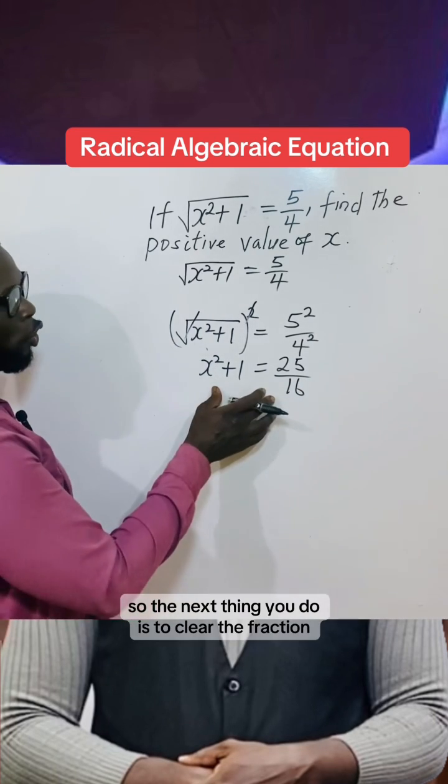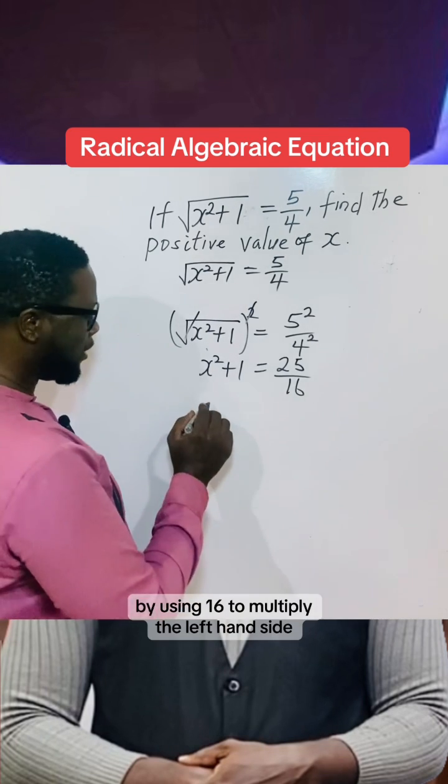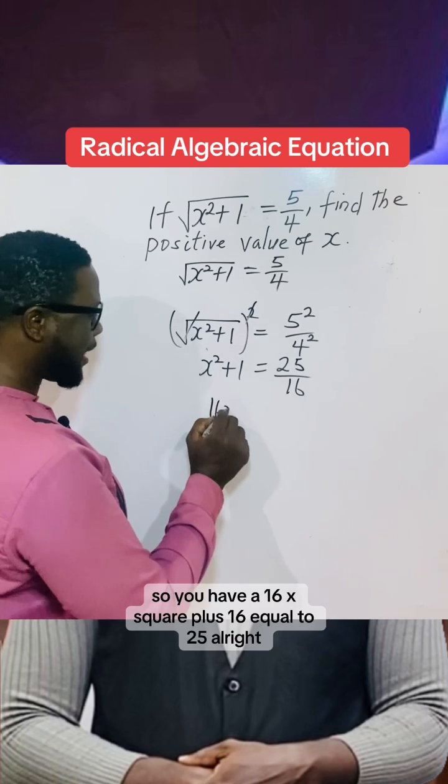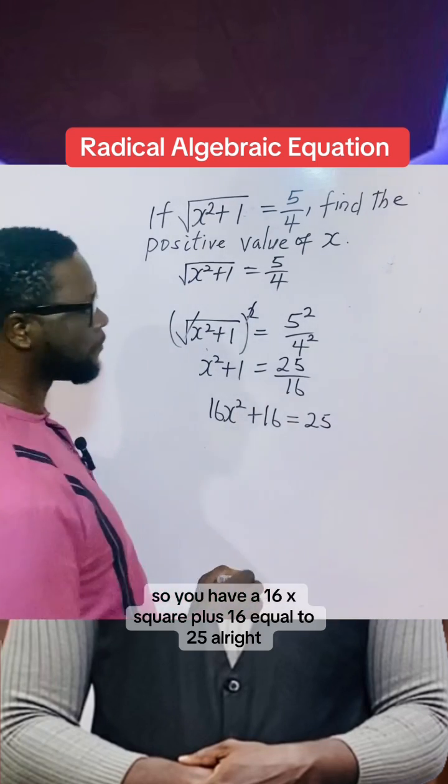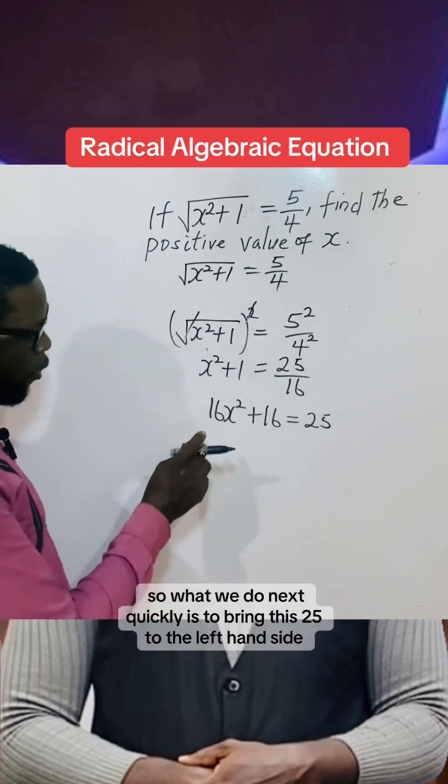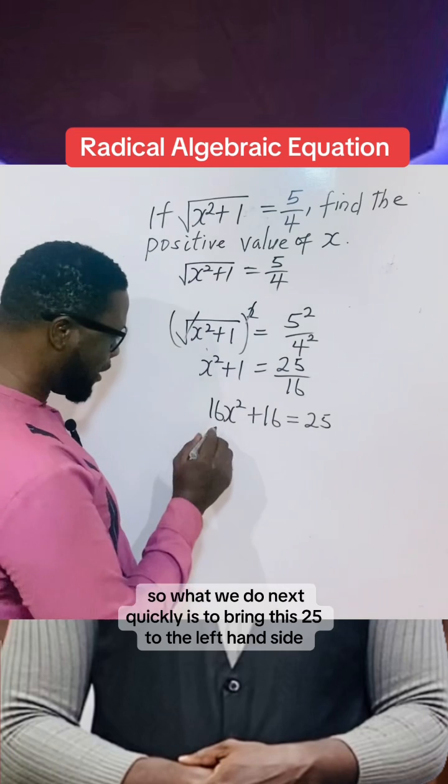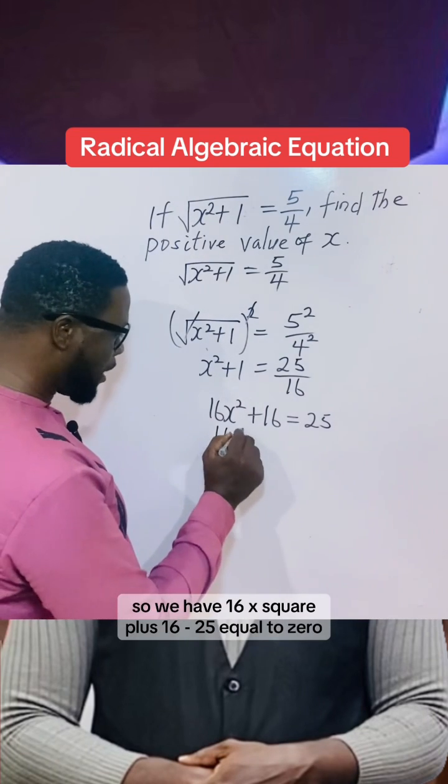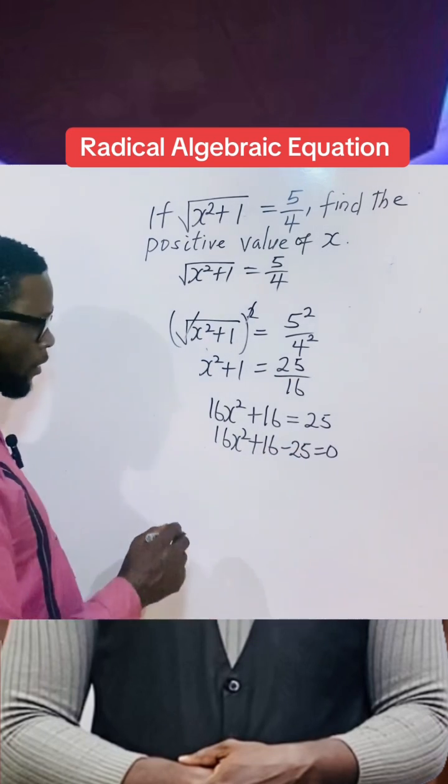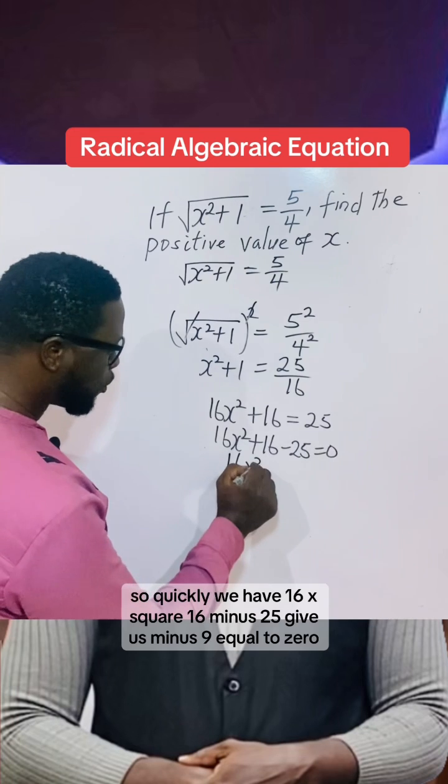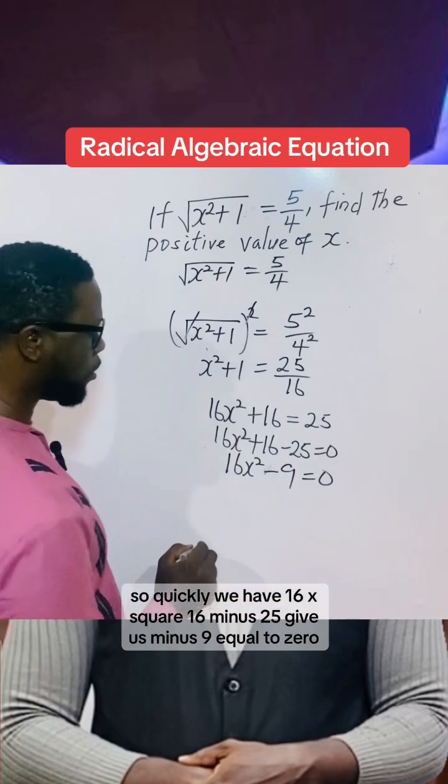The next thing you do is clear the fraction by using 16 to multiply both sides. So you have 16x² + 16 = 25. What we do next is bring this 25 to the left-hand side, so we have 16x² + 16 - 25 = 0. Quickly, we have 16x² - 9 = 0.